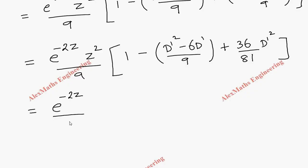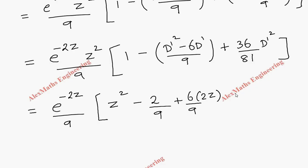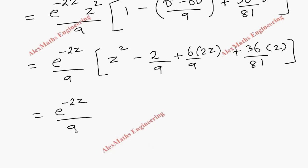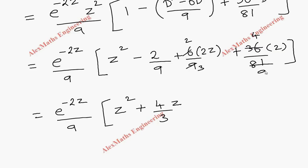Now we apply each operator to z². We have e power minus 2z divided by 9, times: z² times 1 gives z²; differentiating z² twice gives 2, so the D'² term contributes minus 2/9; the 6D'/9 term differentiates z² once to give 2z, contributing plus 6/9 times 2z, which simplifies to plus 4z/3; and the 36/81·D'² term gives 36/81 times 2, which is 8/9. Then 8/9 minus 2/9 equals 6/9, which is 2/3.